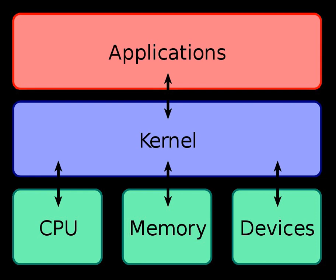Advocates of monolithic kernels point out that the two-tiered structure of microkernel systems, in which most of the OS does not interact directly with the hardware, creates a not insignificant cost in terms of system efficiency. These types of kernels normally provide only minimal services such as defining memory address spaces, inter-process communication, and process management. Proponents of microkernels point out that an error in a monolithic kernel can cause the entire system to crash; however, with a microkernel, if a kernel process crashes, it is still possible to prevent a full system crash by merely restarting the service that caused the error.